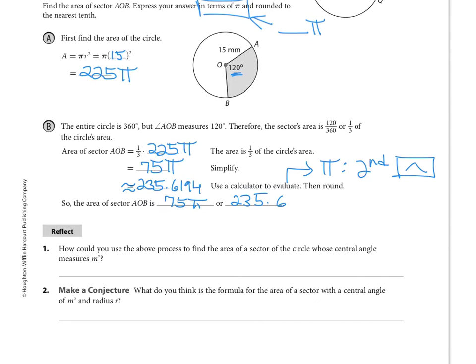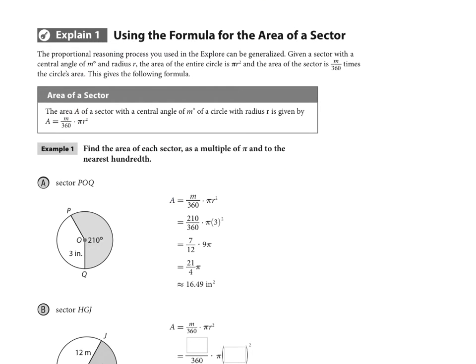Moving on to the next page, we see a statement here in Explain 1 of the area formula for a sector. It's very similar to what you saw for arc length. It's whatever the measure is out of 360, but then instead of times 2πr, we have times πr².